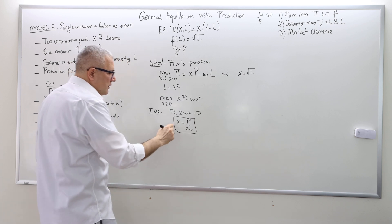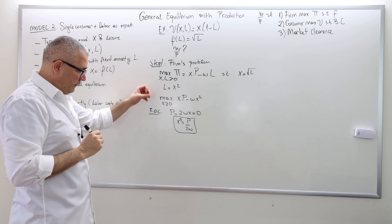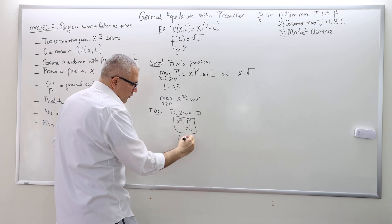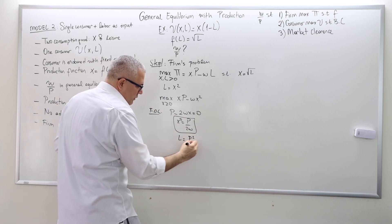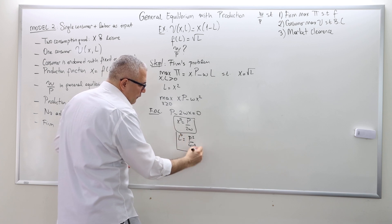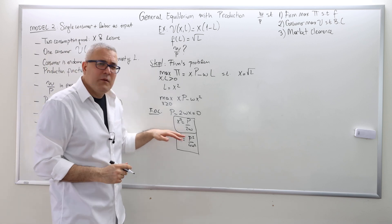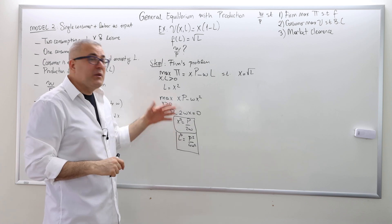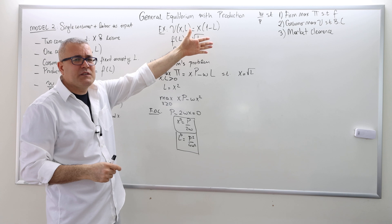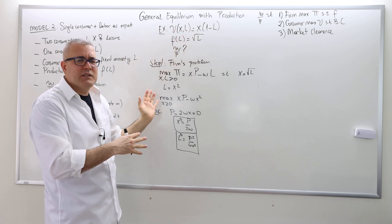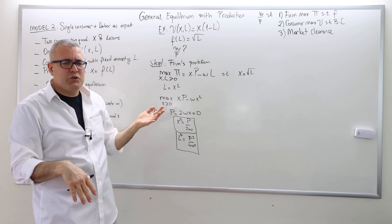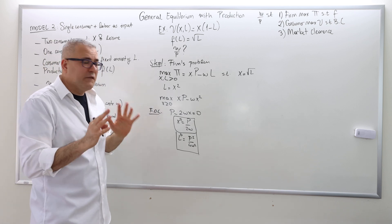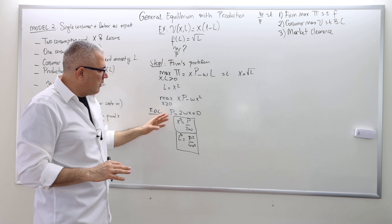So X* = P/(2W) is how much supply of good X the firm will offer. Given that, the labor demand is X squared, which is P² divided by 4W². This is the demand for labor — as the firm, I demand labor; I don't supply it. Be careful about supply versus demand notations, because it matters in step three when equating supply and demand. With only one consumer and one firm it may seem simple, but with two consumers it can get more confusing.